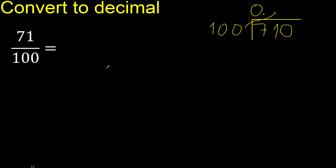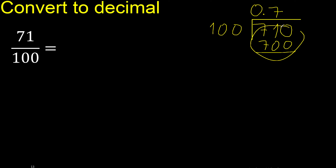Therefore, 100 multiplied by which number is nearest to 710? 100 multiplied by 8 is greater; multiplied by 7 is 700 — is not greater. Subtract. There is no number, therefore complete — always complete with 0.